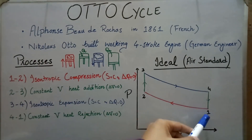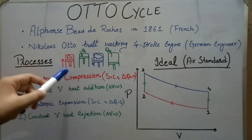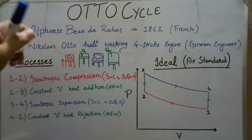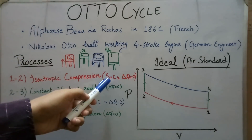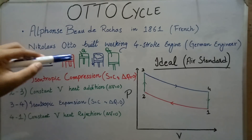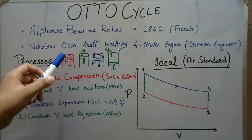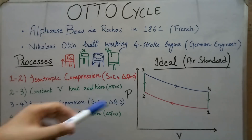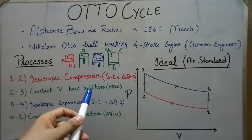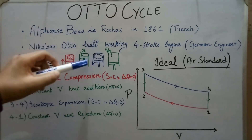Starting with the ideal air standard Otto cycle, the processes include: isentropic compression from 1 to 2, in which a finite amount of working fluid is compressed isentropically — meaning the entropy of the system remains constant and there is no heat flow into or out of the system — and then from 2 to 3 there is constant volume heat addition, in which the working fluid is combusted at constant volume.